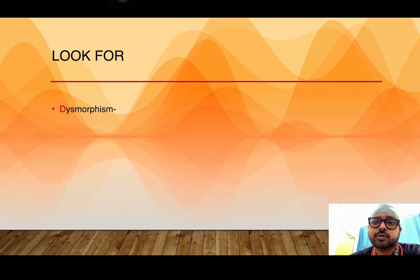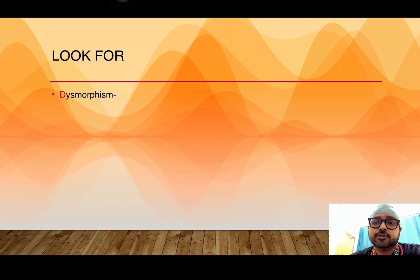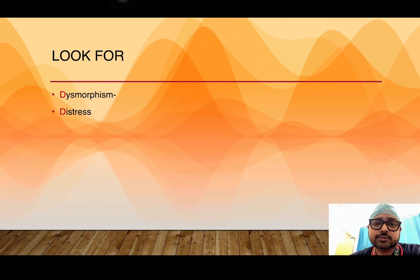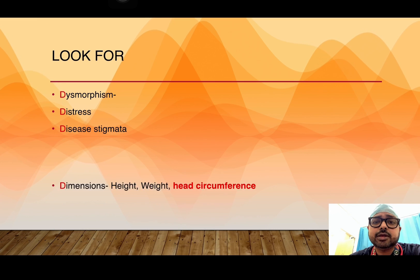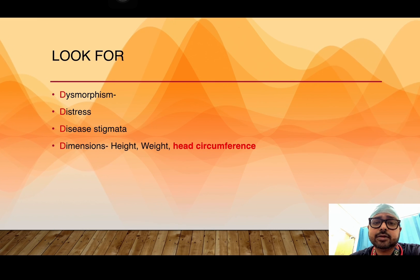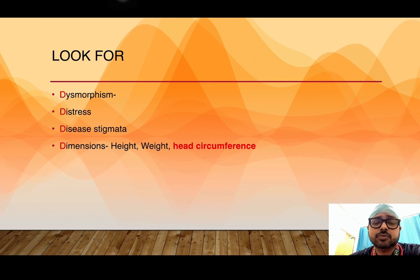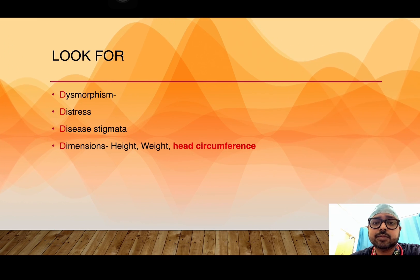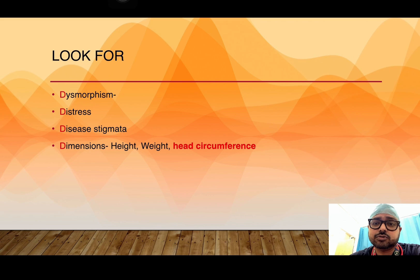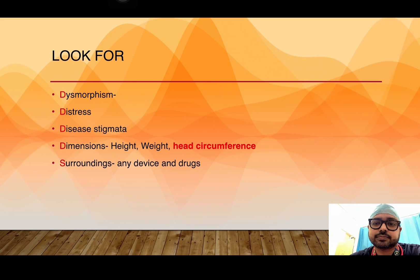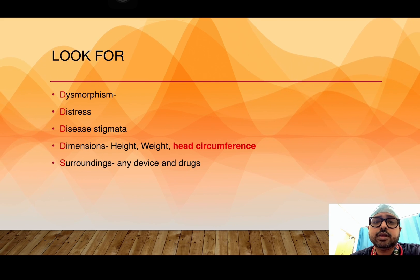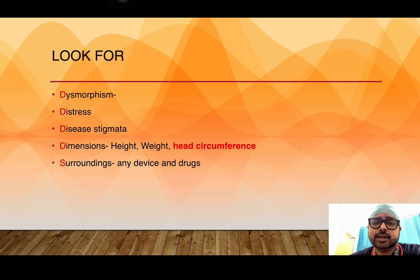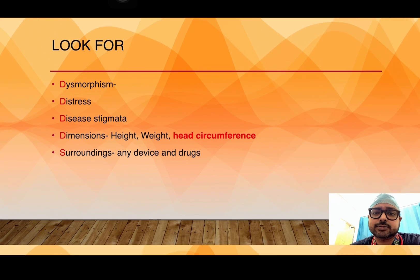Look for any dysmorphism, any distress, any disease stigmata. Measure height and weight, and plot them in a growth chart. Look at the surroundings; look for any devices or any antiepileptic drugs.